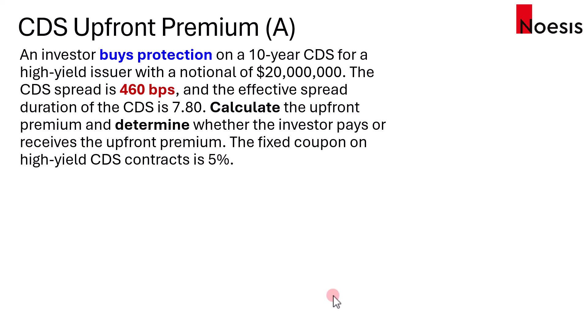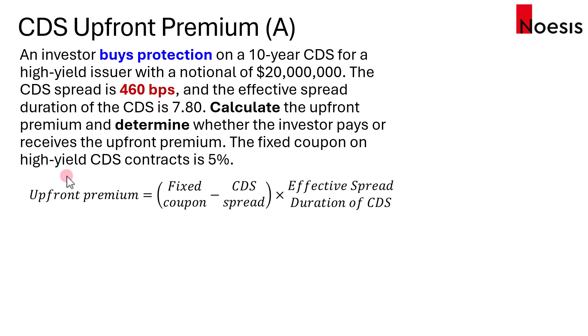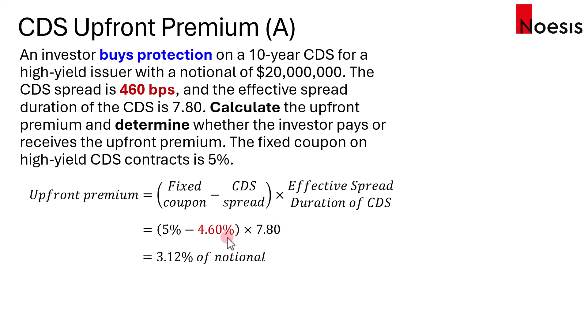The fixed coupon on the high-yield CDS contract is 5%. The formula for the upfront premium is: (fixed coupon minus CDS spread) multiplied by the effective spread duration of the CDS. So that's (5% minus 4.6%) multiplied by 7.8, which gives us 3.12% of the CDS notional, or 0.0312 per 1 unit notional.